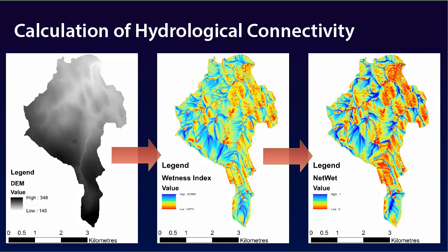To calculate the network index, the route from each point in the landscape to the river channel is calculated. The capture of wetness required for that location to both generate and export water and material is defined as the lowest value of the wetness index along this route. This calculation then gives us a map of the potential for hydrological connectivity across the landscape.